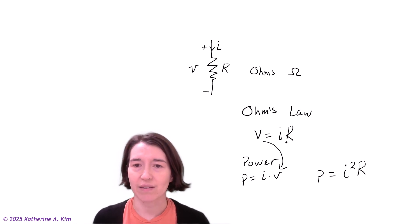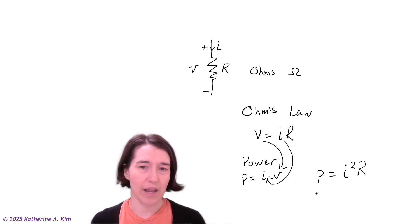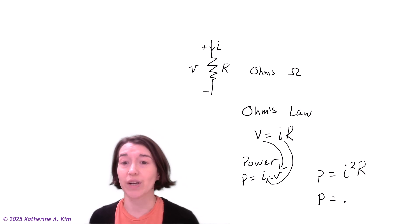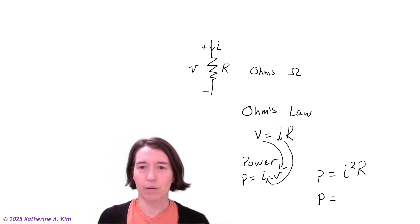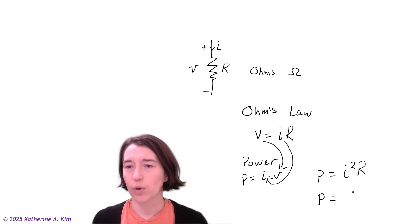The other way is to substitute the current equation. It's the same value, just depending on whether you know the voltage or current. If we put the current into the power equation, moving R over first, we get voltage squared divided by R.